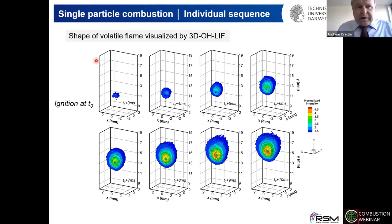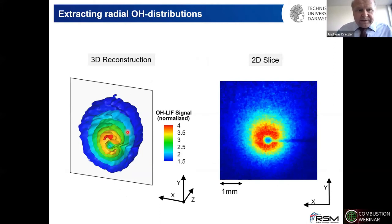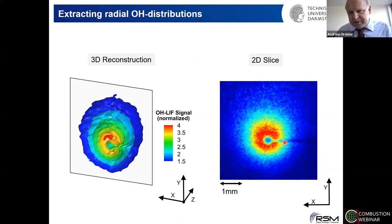Here is an individual sequence of single particle combustion showing the reconstructed shape of the volatile flame visualized by quasi-3D OH-PLIF. From this single sequence, ignition was at T0, then after 3, 4, up to 10 milliseconds you see what happens with normalized intensity. You see a cut through this 3D flame ball. Taking nine milliseconds as an example, you see the reconstruction with ISO contours of OH and the particle at the center. In the central slice coinciding with the particle, there is a shadow downstream because the UV laser light has been absorbed by the particle.